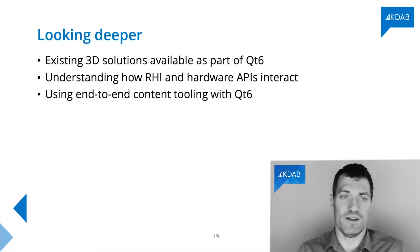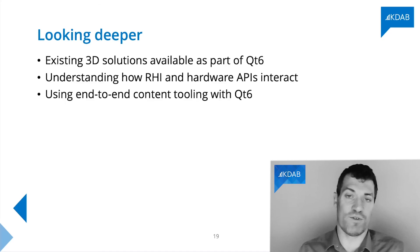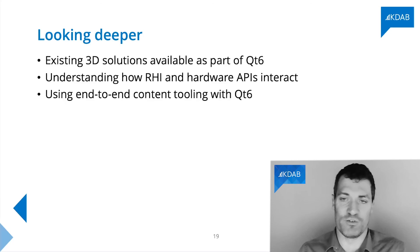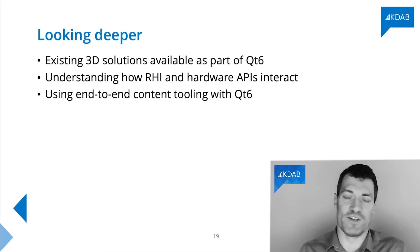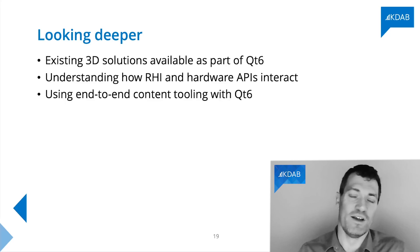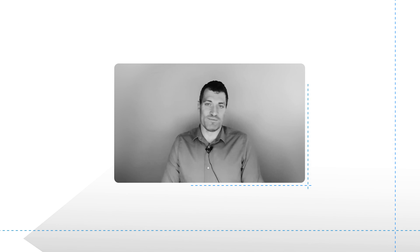In this video, we've touched on various points you may encounter in Qt 6. In future videos, we're going to dive into several of these in more detail — especially the existing solutions that ship as part of Qt 6 for 3D, what they can do, and what the trade-offs are. We'll also do a deep dive into how the RHI layer and hardware APIs interact, and how this might affect your choices including a third-party 3D engine inside Qt 6. Finally, we'll look at options for end-to-end content tooling — creating scenes or assets with behaviours and animations in a complex editor, and importing and running those inside a Qt 6 application. Thank you for your time.